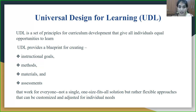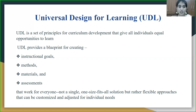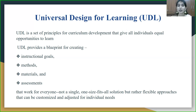Universal Design for Learning focuses on how we are providing instructional goals and how we are designing our goals according to the need of the child. For a child with a specific learning disability and for a child with autism, we need to define instructional goals separately, as both children have different requirements.